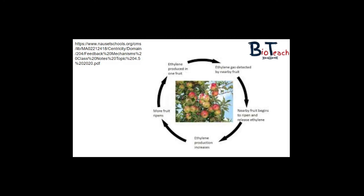Another example of positive feedback is fruit ripening. Ethylene is a gaseous plant hormone involved in fruit ripening and it accelerates the ripening of fruit in its vicinity so that nearby fruit also ripens, releasing more ethylene. Overexposure to ethylene will actually cause fruit to overripen, and that's what's shown in this feedback loop here.